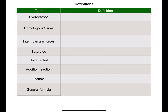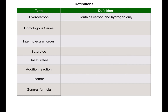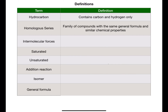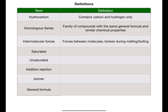Let's start by looking at some definitions. A hydrocarbon is a compound which contains only carbon and hydrogen. A homologous series is a family of compounds which have the same general formula and similar chemical properties. There are often trends in their physical properties such as melting and boiling points. Intermolecular forces are the forces between molecules. These are broken during melting and boiling.